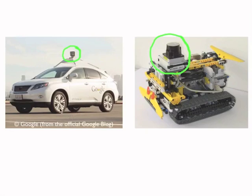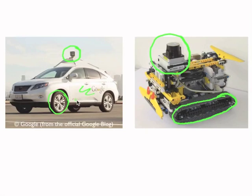We also have a different drive mechanism. The Google car has normal tires, whereas we have a caterpillar system with caterpillar tracks. The car has a drivetrain driving the rear axle. We have two of those tracks here, with two motors driving the left and the right track so the vehicle moves forward.